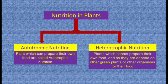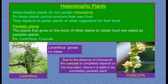Next is heterotrophic mode of nutrition. In heterotrophic mode of nutrition, plants cannot prepare their own food and so they depend on other green plants or other organisms for their food. Heterotrophic plants do not contain chlorophyll and cannot produce their own food; they depend on green plants or other organisms.